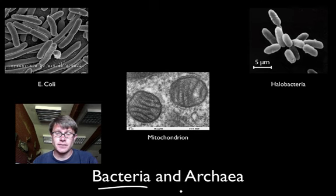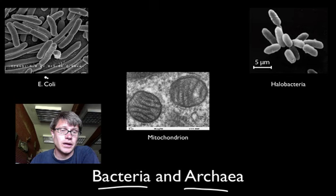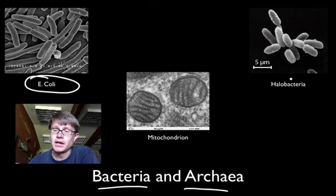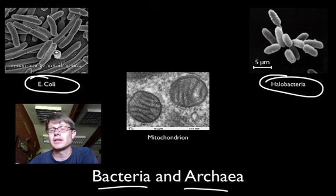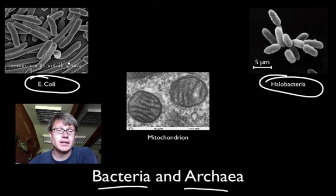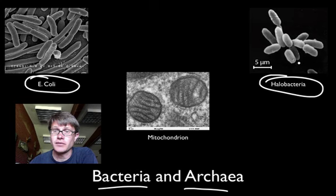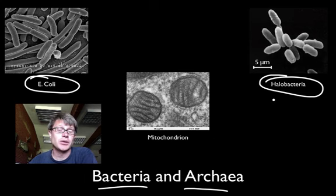Archaea and bacteria — if you look at E. coli, one of the most famous bacteria, and halobacteria, a salt-loving archaea, they both look almost identical. The reason they look identical is they have a similar lifestyle. They're incredibly small — about 2 micrometers for E. coli and about 5 micrometers for halobacteria. They have the same kind of shape and both are really small. Prokaryotes are all small, and that's to increase surface area.